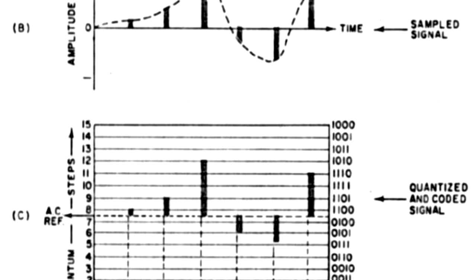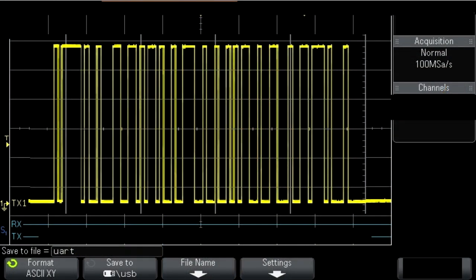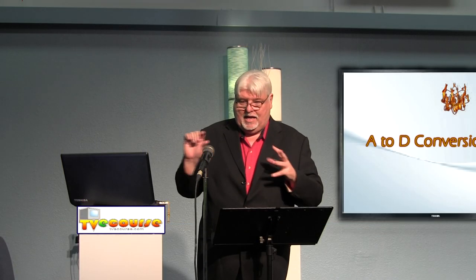We go down in time a little bit and take another sample — another binary number. We take another sample, and there's another binary number. So what happens is this analog signal is actually turned into a stream of binary numbers, ones and zeros, that when reconstructed at the other end of reception can be turned back into an analog signal to drive a speaker.